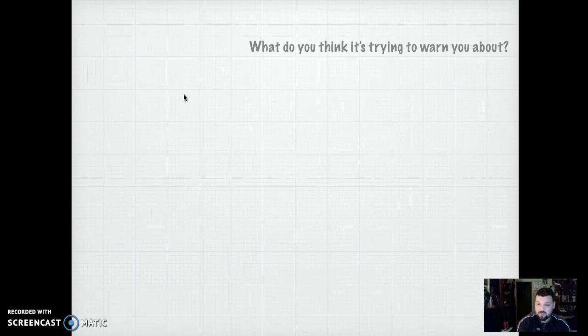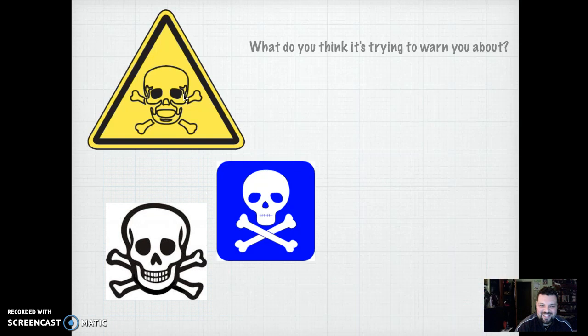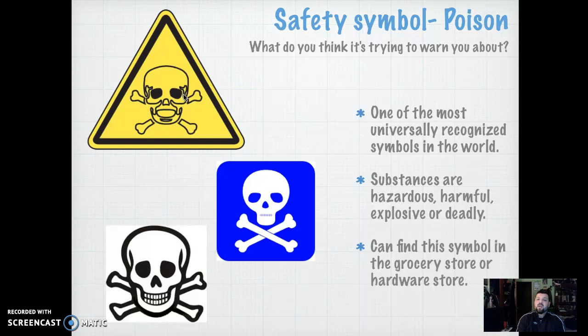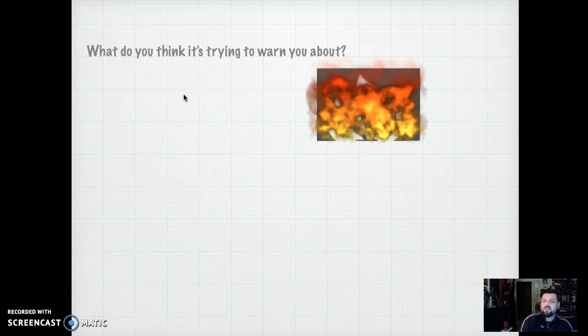Let's take a look at this one — it's really popular with kids when they do their projects. This is not the pirate symbol, but this is the poison symbol. We see this one at home in our cleaners, our detergents, in the Home Depot section. This is one of the most universally recognized symbols in the world. It means that you are dealing with a hazardous, harmful, or even explosive, poisonous chemical. This one speaks for itself — we see it all the time, everywhere.